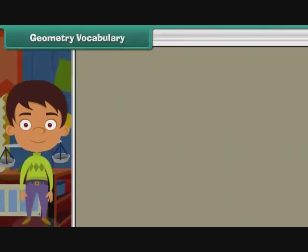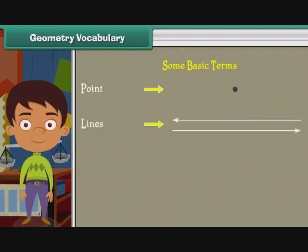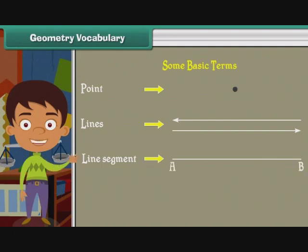Geometry vocabulary. Let us know about some basic terms used in geometry. Point: it is an imaginary dot. Lines: all these are straight lines. Line segment: part of a line is called a line segment. Here AB is a line segment. These are curved lines.